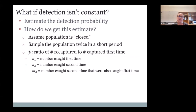If detection probability isn't constant and you think it varies with individual, space, or time, then we have to estimate it. We do this in essentially the same way you estimate a sample mean from a population — we acknowledge it's not perfect and not the true value, there is some uncertainty. But we're going to use this detection probability to try and correct our counts to get an estimate of abundance.